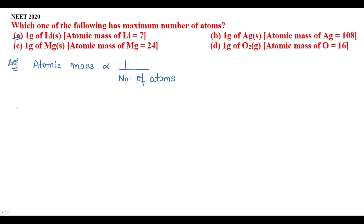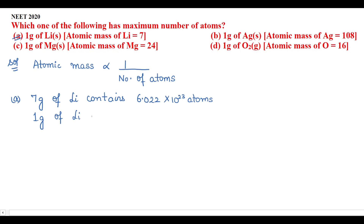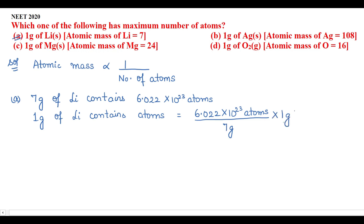Now we'll solve this in detail. The first one is one gram of lithium. I'll apply the unitary method: seven grams of lithium contains Avogadro's number of atoms. So one gram of lithium will have 6.022 × 10²³ atoms divided by 7 grams × 1 gram.